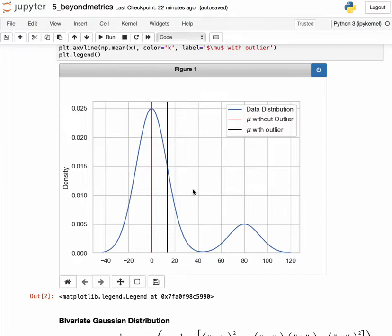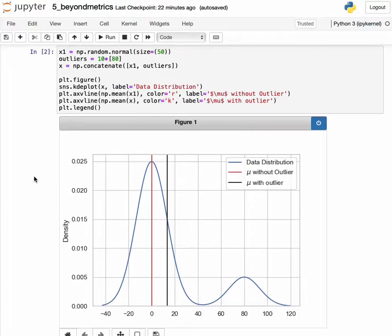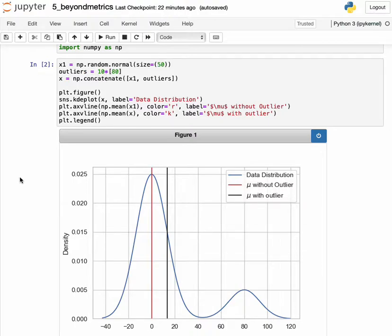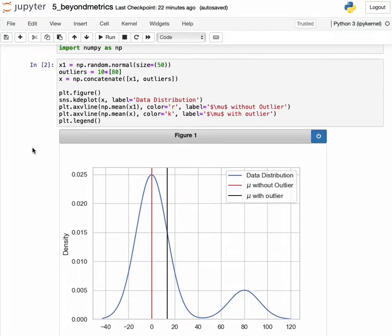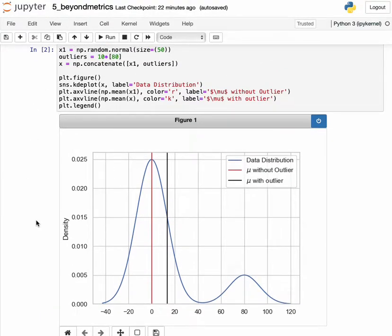However, I've added some outliers to this data, and you can see that I've done that here. And then what I'm showing in this plot is the mean of the data with the outlier and the mean of the data without the outlier. So the mean without the outlier seems to be around zero, which is how the data was generated up here, and the mean of the data with the outlier is around 15 or so.